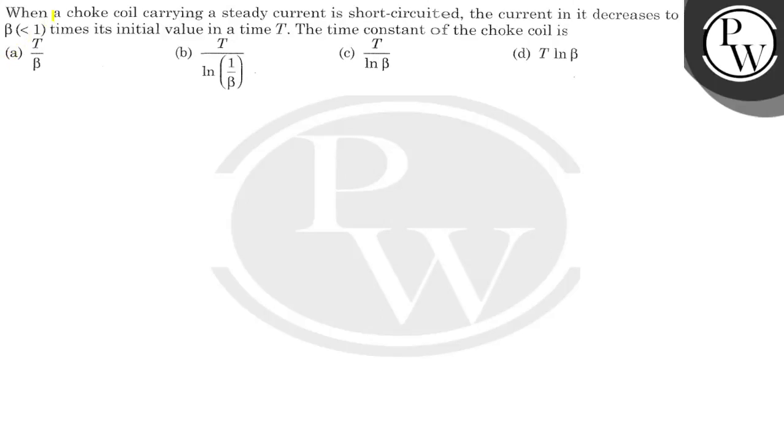Hello, let's see this question. When a choke coil carrying a steady current is short-circuited, the current in it decreases to beta (less than 1) times its initial value in a time capital T. The time constant of the choke coil is...